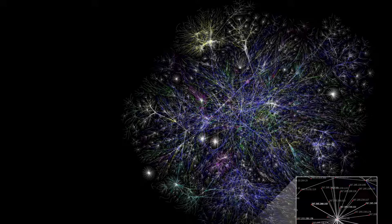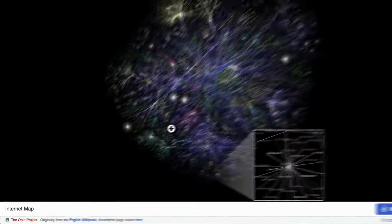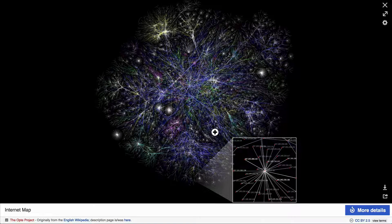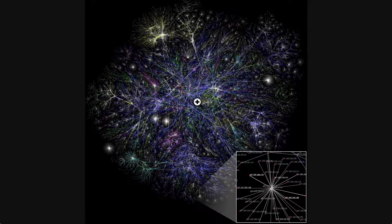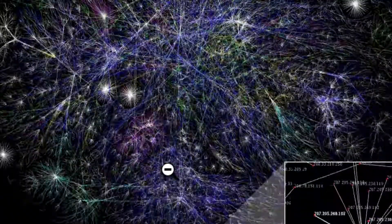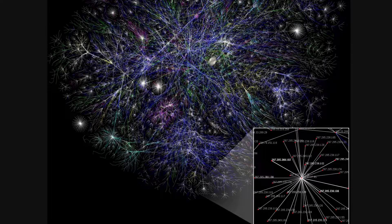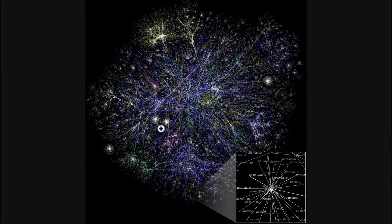Just to show you how insane this is — somebody from the Opti project, which I got off of Wikipedia, mapped out in 2015 just 30% of the network. Each one of these dots is an IP address — a computer connected to another computer connected to another computer. That's the internet: all these connected computers just transferring files between each other.